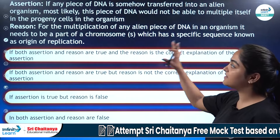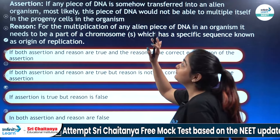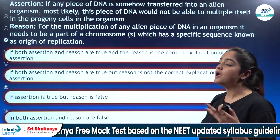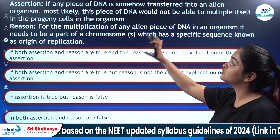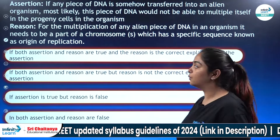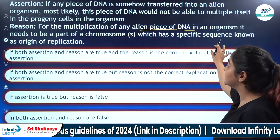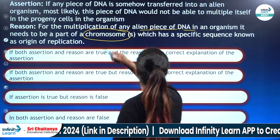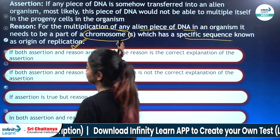The first question: we have assertion and reason given here. The assertion is — if any piece of DNA is somehow transferred into an alien organism, most likely this piece of DNA would not be able to multiply itself in the progeny cells in the organism. Now the reason: for the multiplication of any alien piece of DNA in an organism, it needs to be a part of a chromosome which has a specific sequence known as origin of replication.